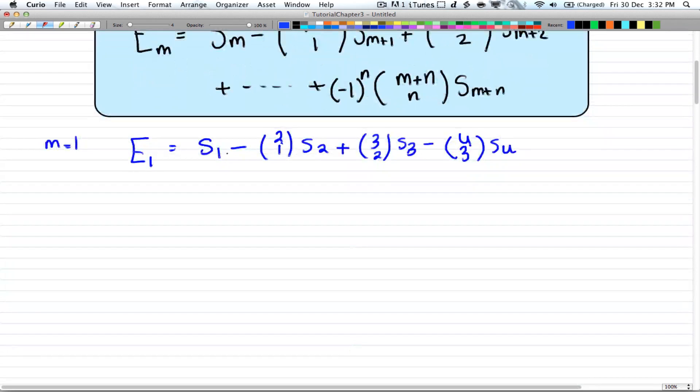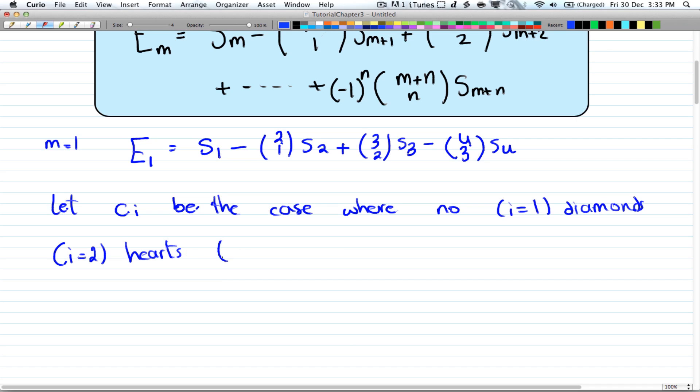So just like last tutorial we're going to set up our cases. So let c_i be the case where no, so if i equals 1 you have diamonds. If i equals 2 that will be hearts. If i equals 3 that will be spades.